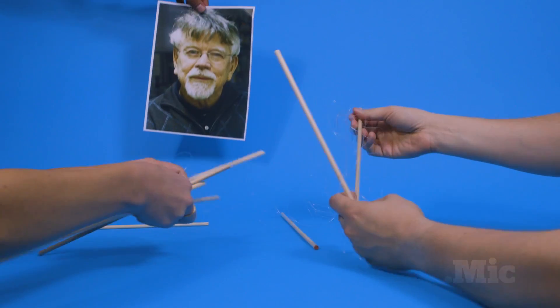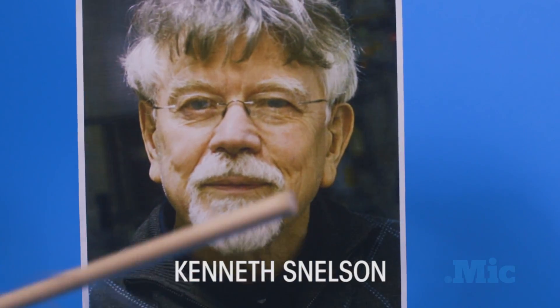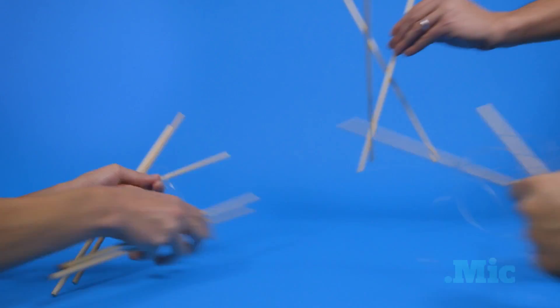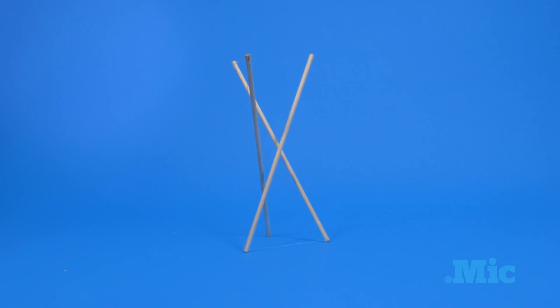But all of a sudden, somebody who must have seen one of the sculptures of Kenneth Snelson, who built these structures called tensegrity, tensional integrity, built a three-stick structure. And it's kind of wild. It's like, you don't think it's possible.